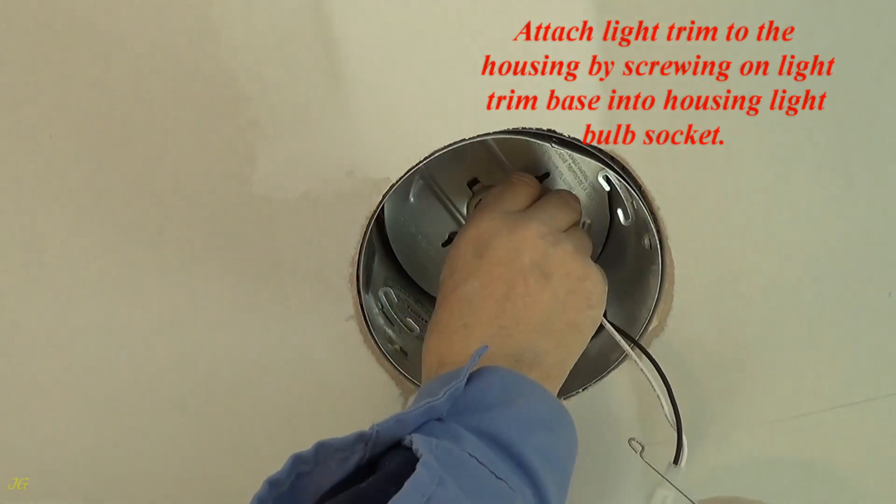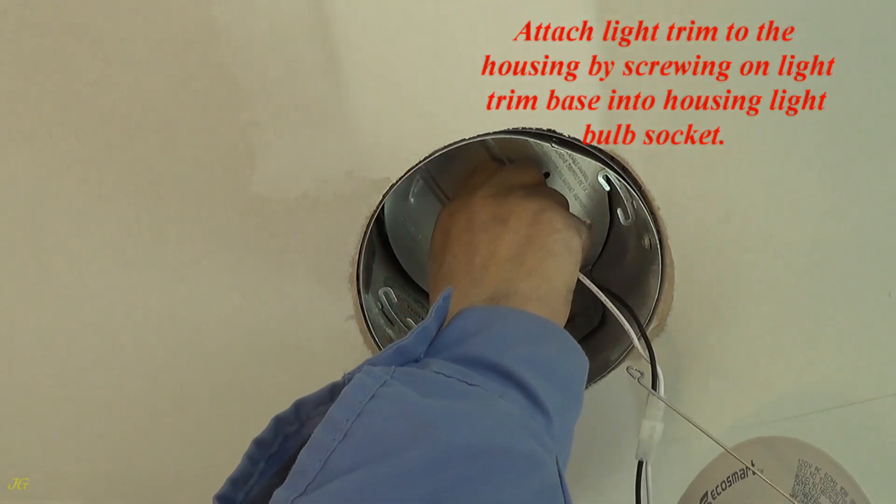Attach light trim to the housing by screwing on light trim base into housing light bulb socket.